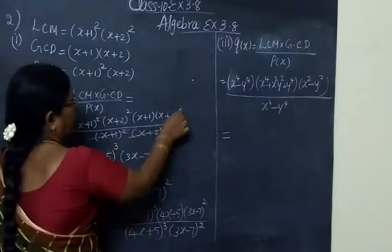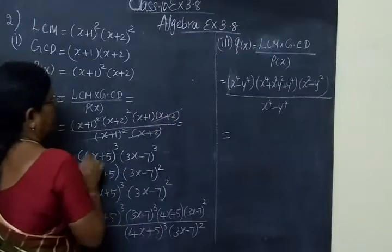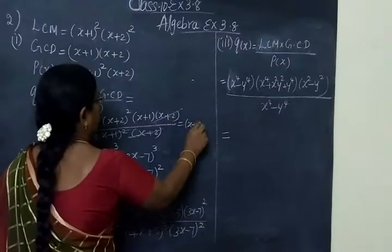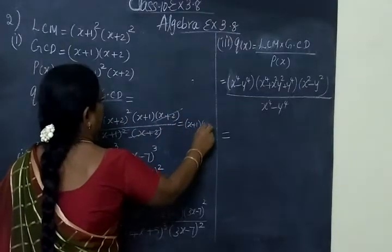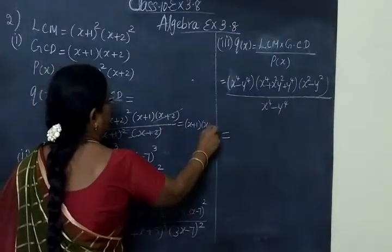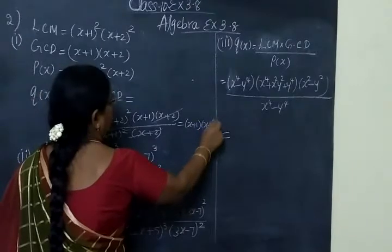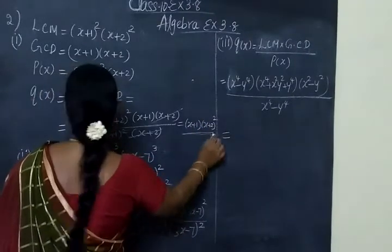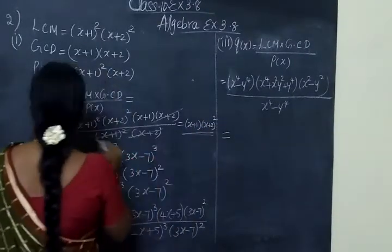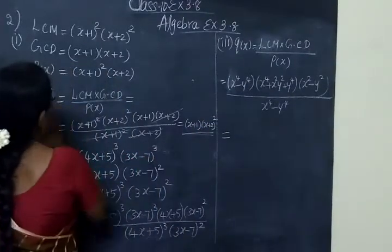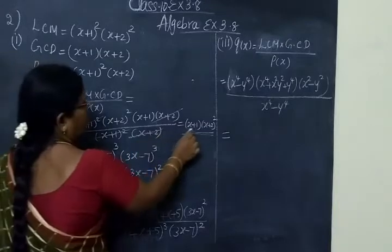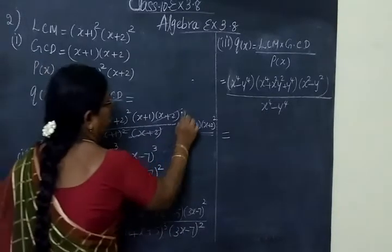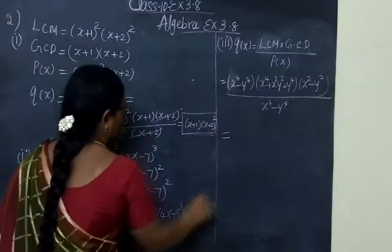So the remaining terms are: X plus 2, then X plus 1, then X plus 2 whole square. So this is the answer for U of X — the other polynomial. This answer is complete.